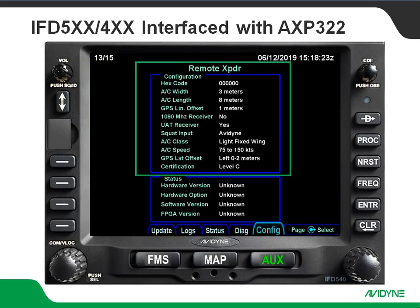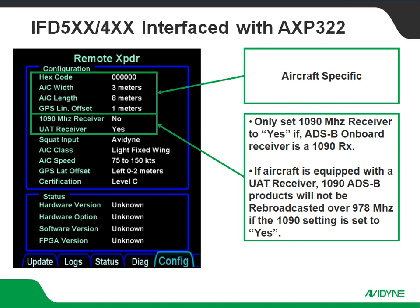On the remote transponder config page, up top we've got our hex code — this is where you put your ICAO code for your tail number — aircraft width, aircraft length, and GPS linear offset. The receiver section for 1090 MHz receiver or UAT receiver is an important one. This is setting the transponder to tell the ground station on what frequency you're receiving ADS-B information. If you only have a UAT receiver on board, make sure you set UAT receiver to yes and 1090 MHz receiver to no, or vice versa.